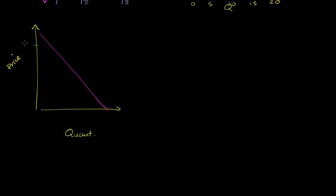Let's say that the price is up here — let's call that P1 — and then the quantity demanded, let's call that Q1. We already know that the total revenue is the area of this rectangle right over here. This is the total revenue; it's just the price times the quantity. If I'm selling two burgers an hour for $9 a burger, I'm going to make $18 per hour — that's going to be this area right over here.